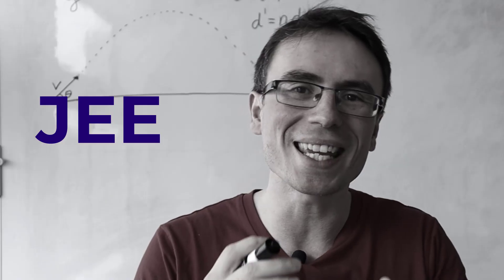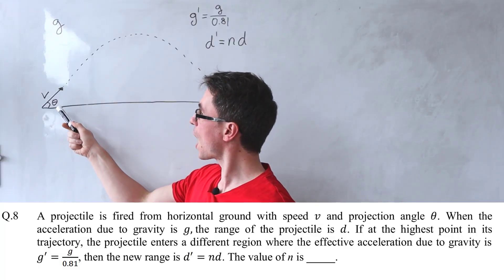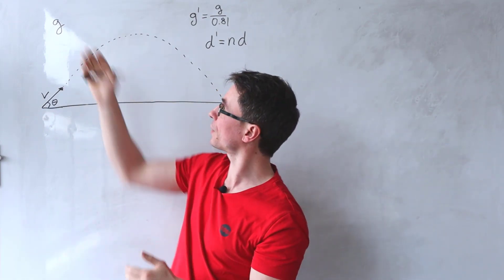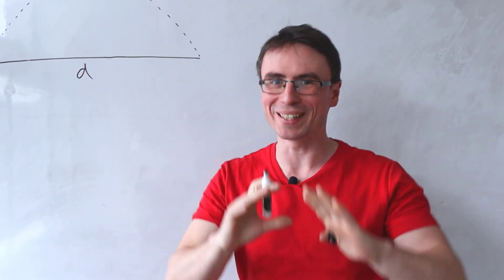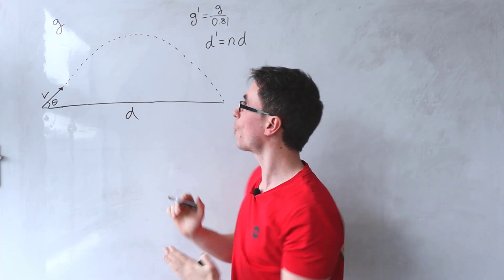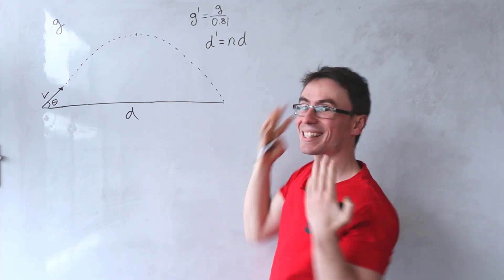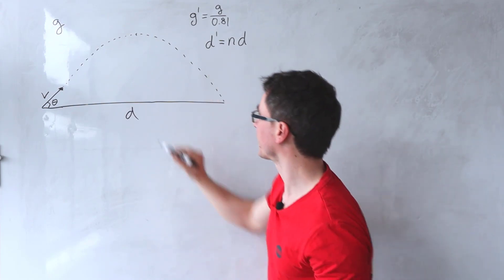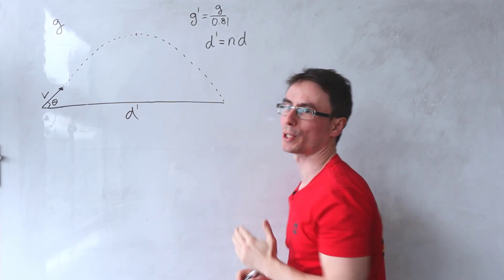Let's solve the last question from the JEE Advanced paper in Physics. We have a projectile fired at an angle theta and speed v. Under normal conditions, when gravitational acceleration is g, the range is d. However, in this question, when the projectile reaches the highest point in its trajectory, the acceleration changes and is suddenly given by g divided by 0.81. The new range is given by d'.